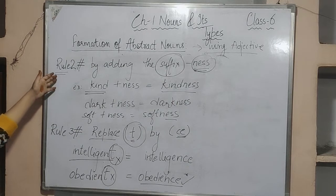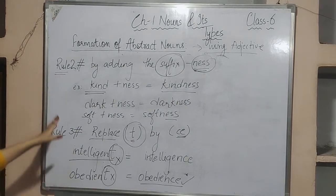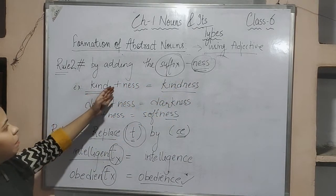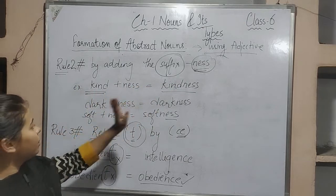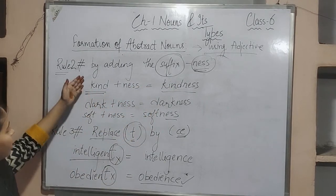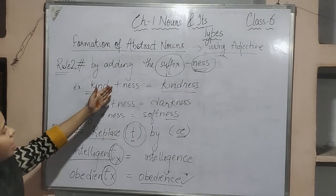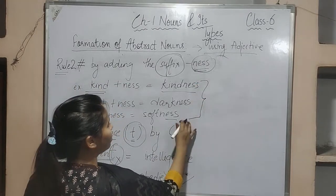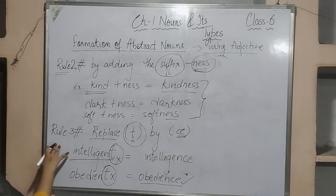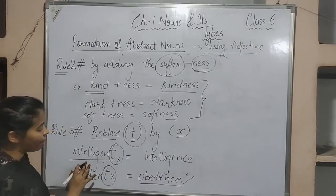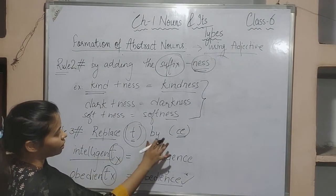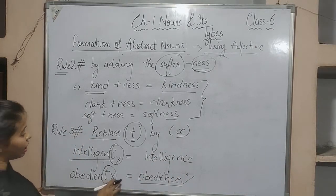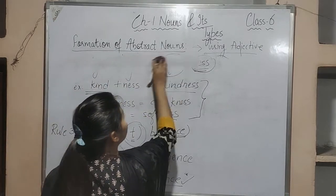In rule two, you add the suffix -ness: kind → kindness, dark → darkness, soft → softness — these adjectives get converted into abstract nouns. Rule three: replace T by CE — intelligent → intelligence, obedient → obedience.